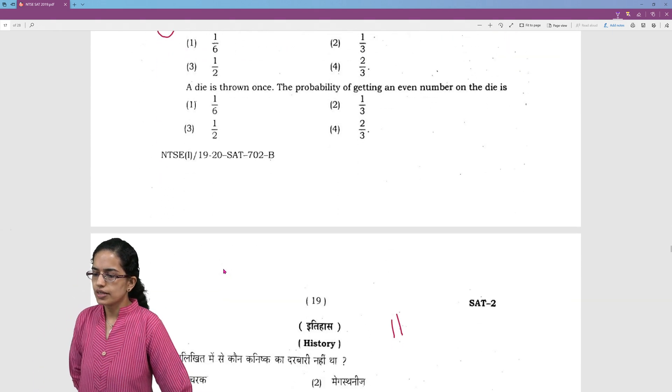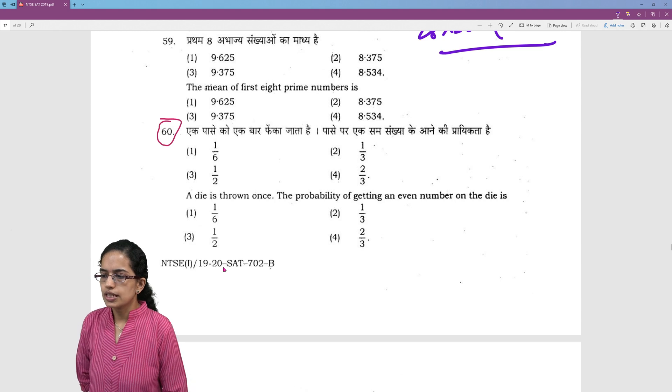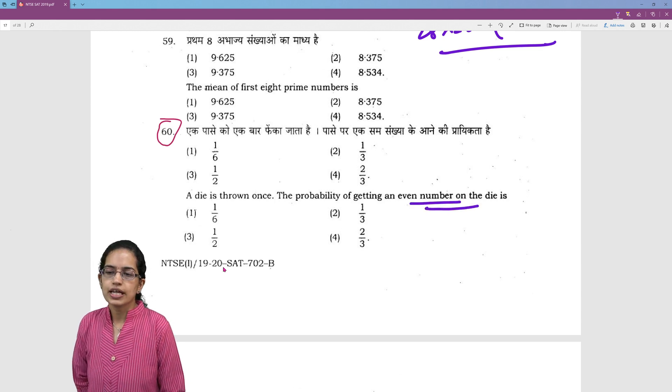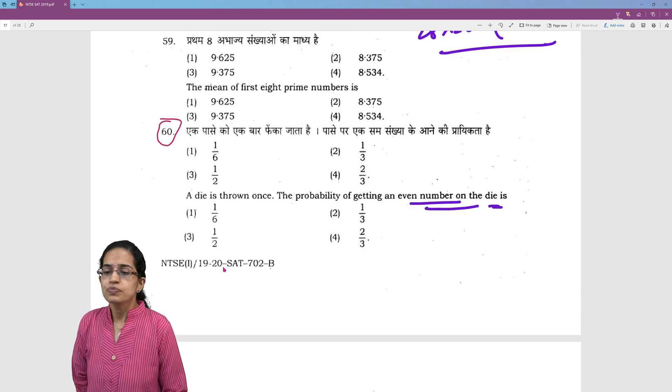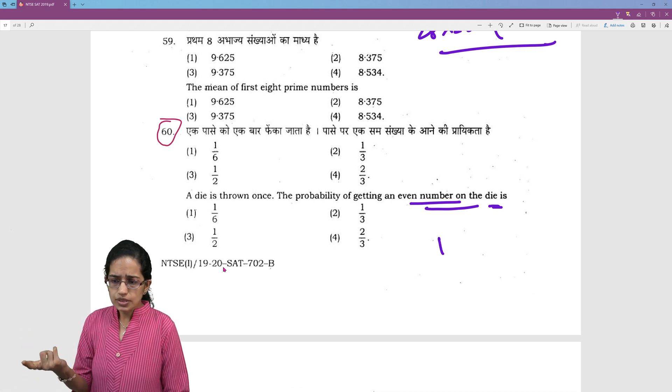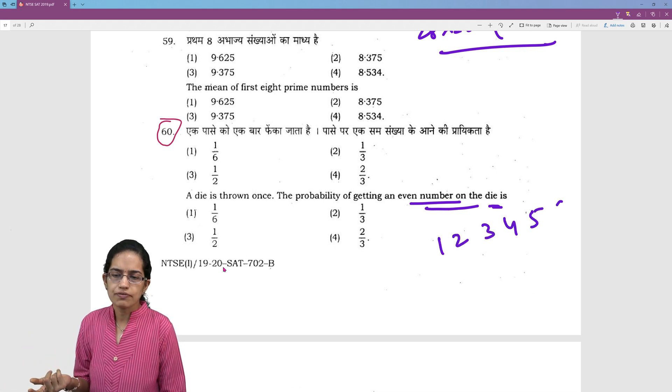The next question is again very simple. This question says a dice is thrown. The probability of getting even number on a dice is - now dice, when I'm throwing a dice, I have 1, 2, 3, 4, 5 and 6. 6 sides.